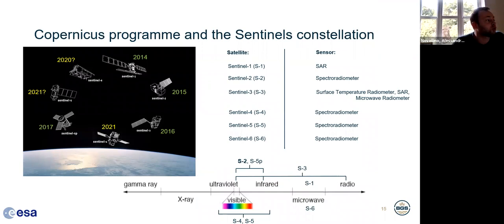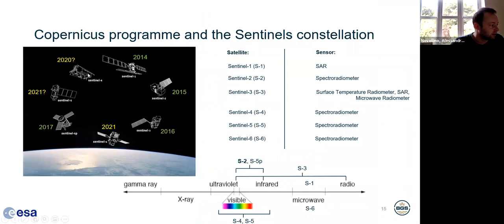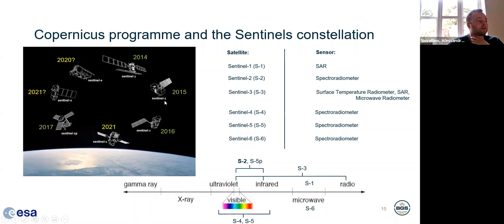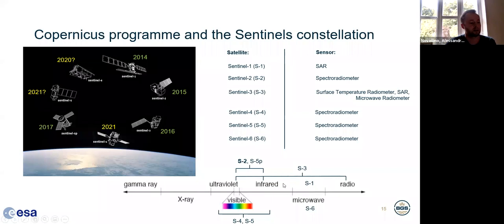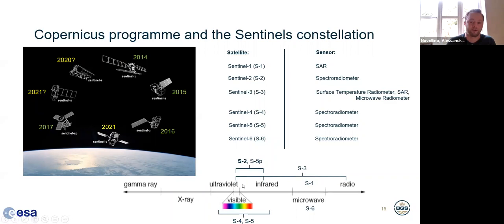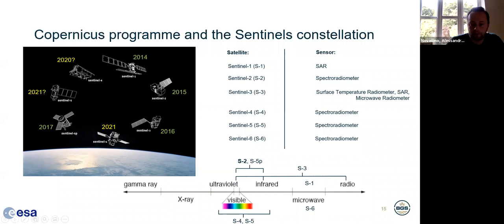The European Space Agency has created this Earth Observation program called Copernicus. It's a list of seven satellites — actually they are twins, so for each of the six constellations there are two satellites: Sentinel-1A and 1B, Sentinel-2A and 2B, and so on. Some of them cover the same interval of the electromagnetic spectrum. I've put here the satellite number versus the electromagnetic spectrum. Some — for example Sentinel-2, Sentinel-5P, or Sentinel-3 — overlap in terms of wavelength but have different scope. For more information you can visit the ESA website, but we are going to focus just on Sentinel-2.